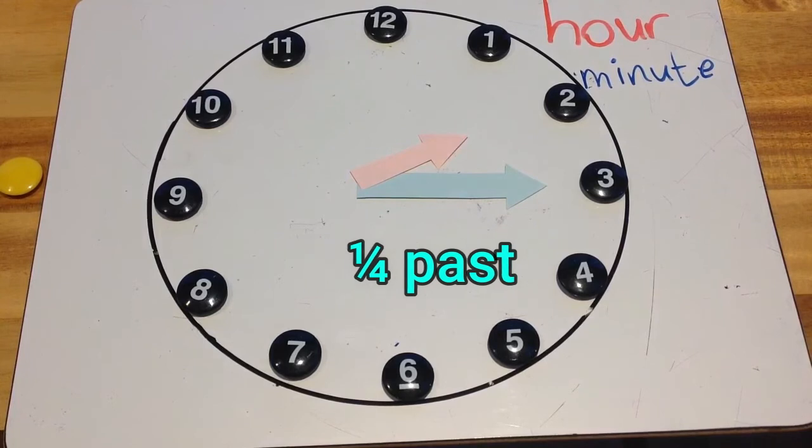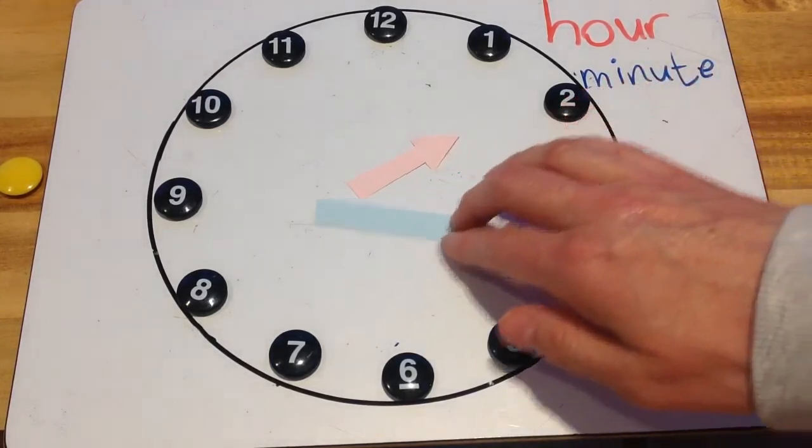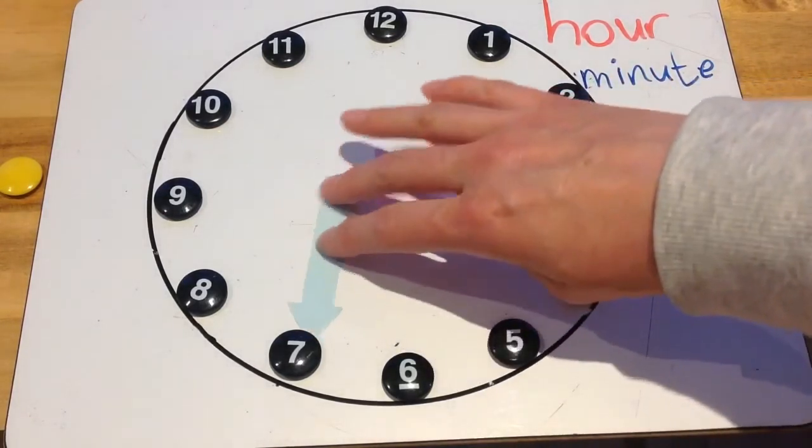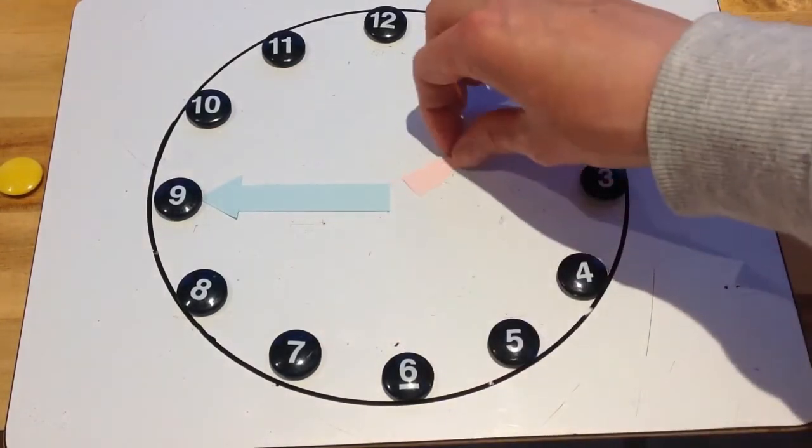Now, what we had just started to learn in second class, just before we left, was what happens when that hand, the big hand, the minute hand, is pointing to the 9.